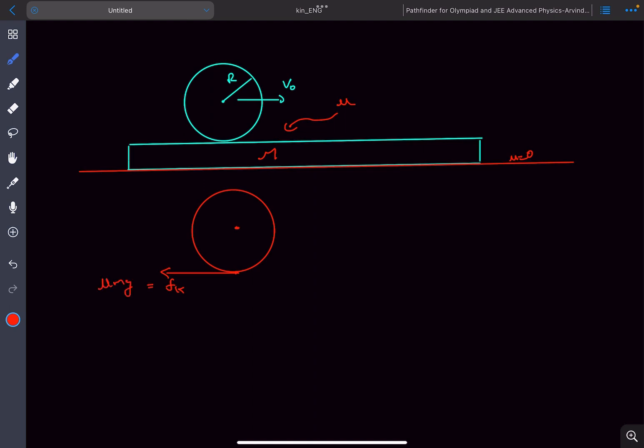This friction force will be responsible for decreasing the momentum of the center of mass of the sphere. The impulse due to this friction force will be integral fk dt in the minus i cap direction, where I'm defining this as the positive x direction.